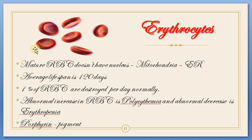Why is the average lifespan 120 days? The cell repairing is majorly because of DNA present in the cell. As RBC doesn't have any nucleus or any organelle to correct or repair itself, its lifespan is also getting over by 120 days. They can't produce any protein or enzymes to repair. After 120 days, all their enzymes and proteins get used up and they become worn out and have to be destroyed.